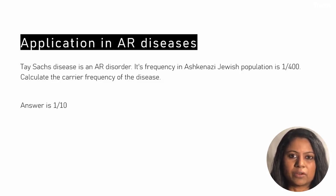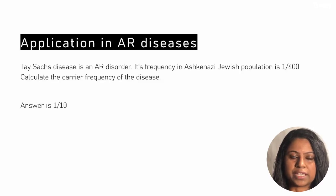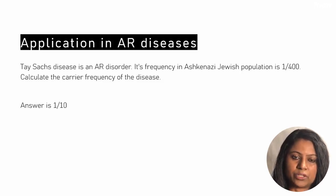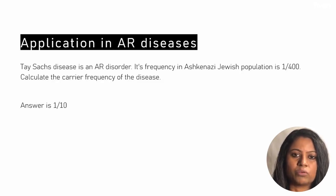Since the frequency of Tay-Sachs is 1 in 400 and it is autosomal recessive, that means 1 in 400 represents q², the homozygous diseased state. From that, we calculate q = 1 in 20. To find the carrier frequency we use 2pq. Since p + q = 1, p is approximately 1. So the carrier frequency is 2 × 1 × (1/20) = 1 in 10.